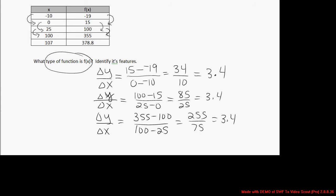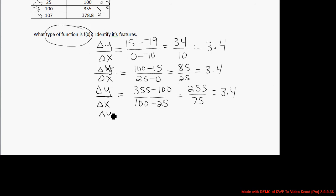And lastly, from point 4 to point 5 in the table, we want to check that rate of change. Change in y over change in x is 378.8 minus 355 over 107 minus 100. This is negative 23.8.